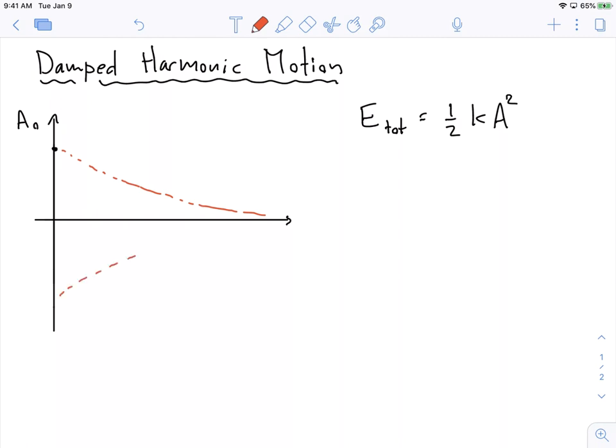I'm going to draw it decaying on both sides like this. But the spring still oscillates, the system still oscillates, and so what it oscillates in between is these two lines, which we call the decay envelope. So it's still oscillating back and forth, but as it goes on in time, the amplitude decreases.